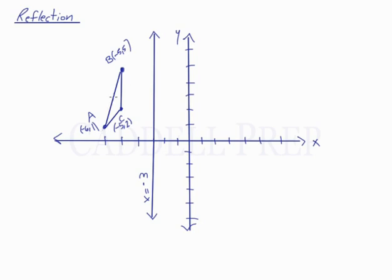Let's say we want to reflect this triangle over this line, the line x equals negative 3, rather than the x-axis or the y-axis. So we have reflecting triangle ABC over the line x equals negative 3.